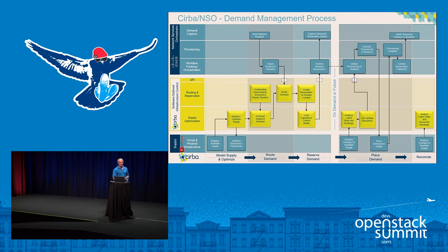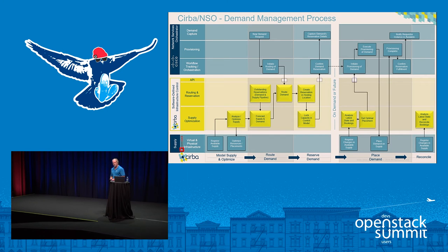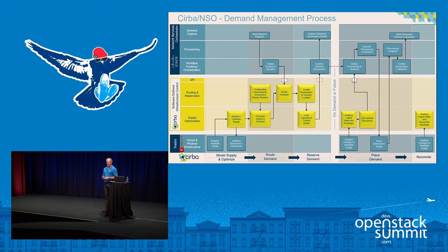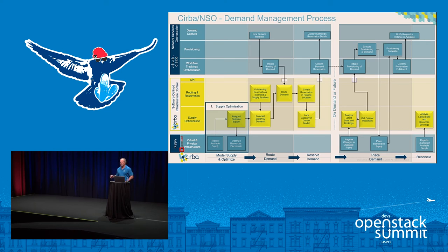Here's a more detailed workflow of a real-world example. This is Cisco and their Network Services Orchestration tool as they provision in real time NFV types of workloads — routers, firewalls, switches. At the top you have the Cisco layer capturing demand and doing provisioning and orchestration — think of them as the arms and legs. Serba sits in the middle as the analytics, software-defined infrastructure control with a real-time API, routing and reservation capability, and continual supply optimization. At the bottom, the supply is OpenStack with KVM. The first step is supply optimization: continual analysis of moving workloads around and changing allocations to understand how much supply we have available.